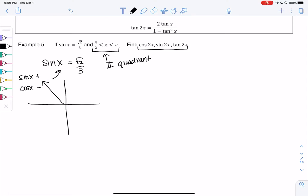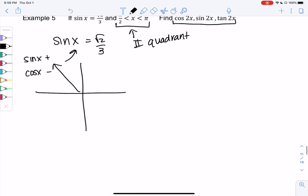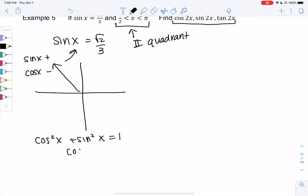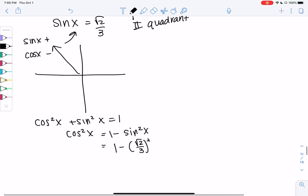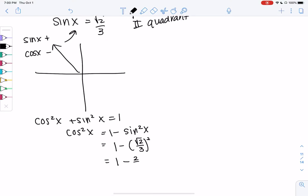So let's find cosine of x. We know that cosine squared plus sine squared is 1, so cosine squared is 1 minus sine squared. So I'm just going to go ahead and plug in sine. We're not doing the 2x yet. So we get 1 minus square root 2 over 3.